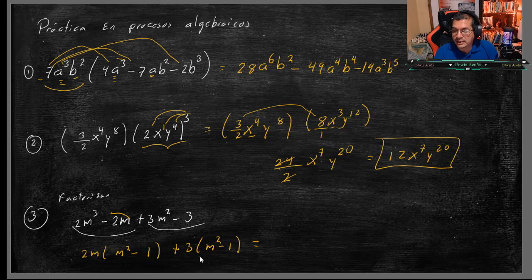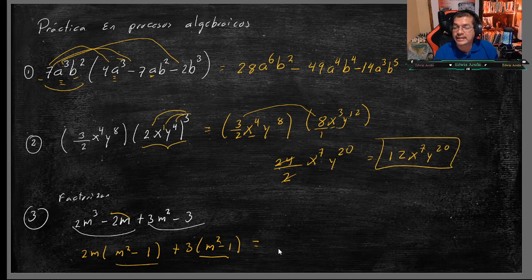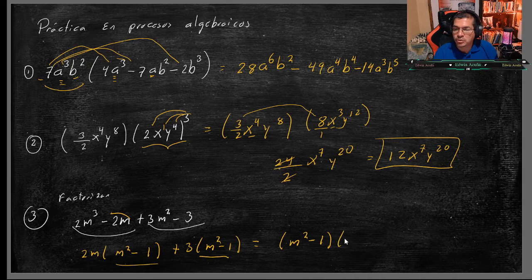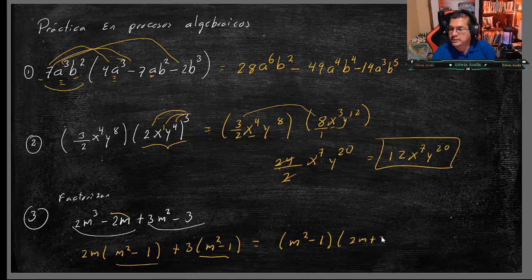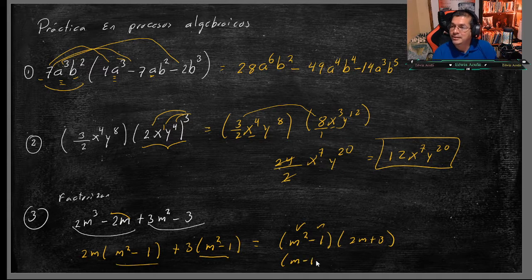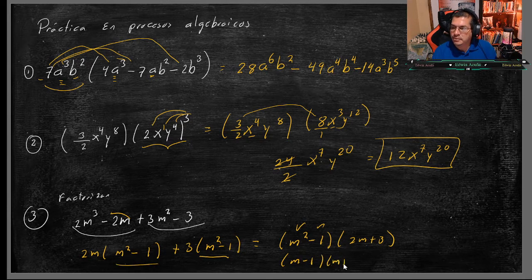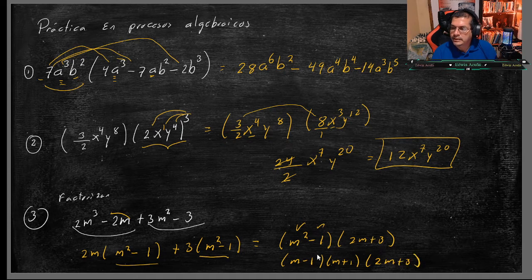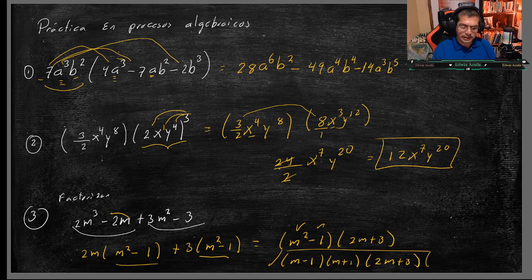Profesor, ¿cómo sé si está bueno? Este y este tienen que ser iguales, veo que son iguales, lo copio, M2 menos 1, por lo que sobró, 12M más 3. Profesor, ¿y ahora? Raíz y raíz, entonces me quedaría M menos 1, por M más 1, y agrego el otro señor que sea 12M más 3. Y este sería el resultado de esa factorización completa.